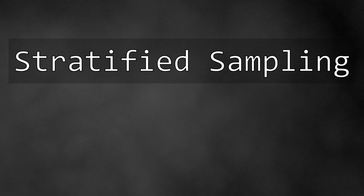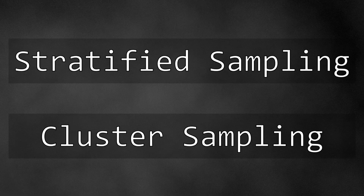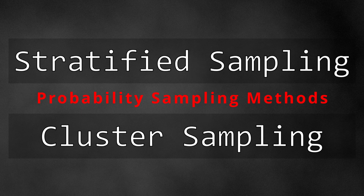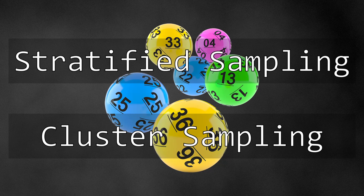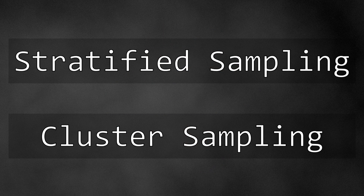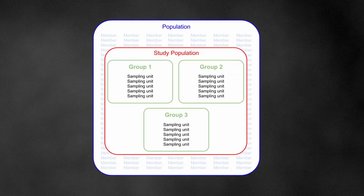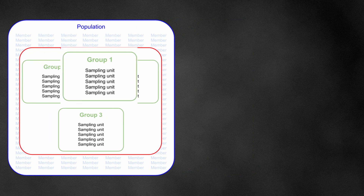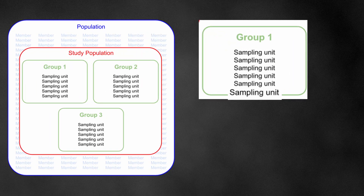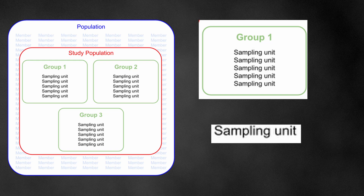Both stratified and cluster sampling methods are probability sampling methods wherein, at some point in their strategy, both utilize random selection. Both methods divide the study population into specific groups based on some feature before selecting the specific sampling units. How the strategy divides the study population is part of what defines stratified from cluster sampling.